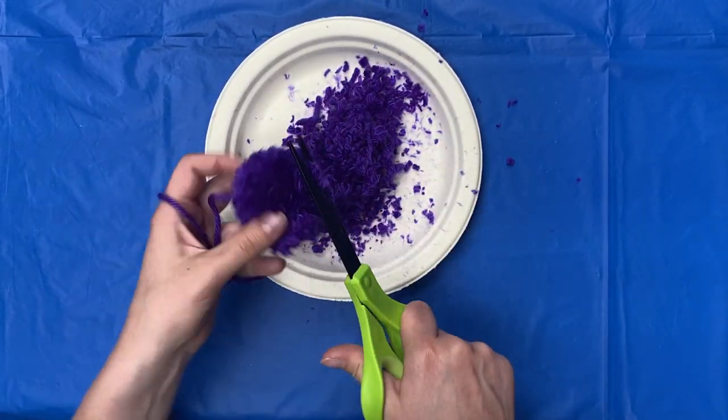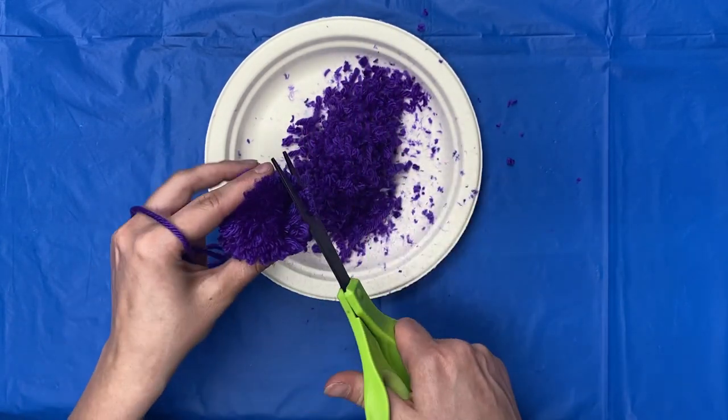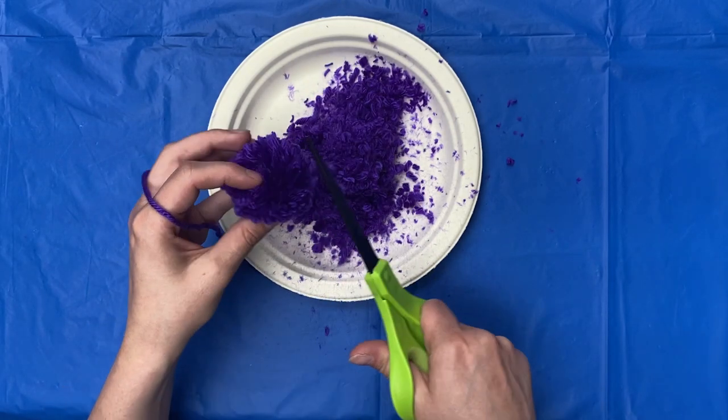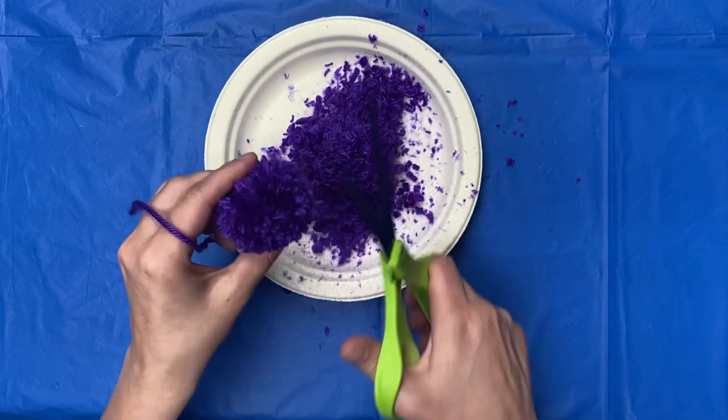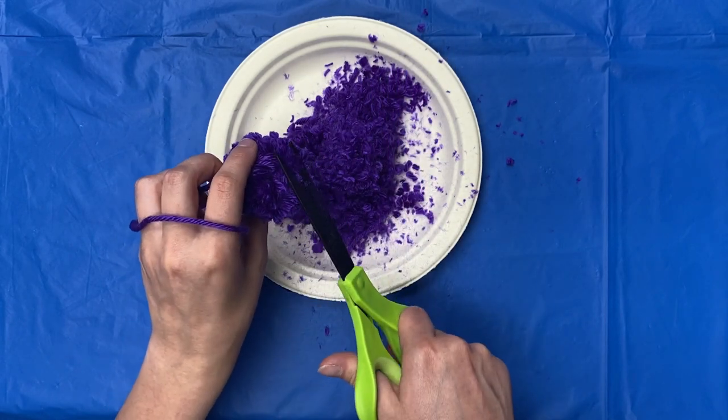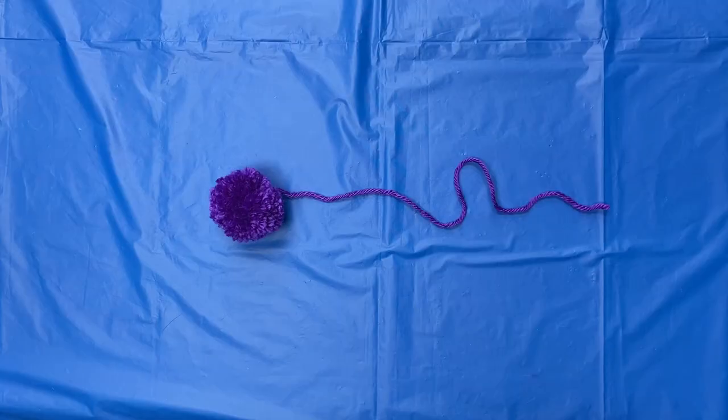I recommend holding onto your tail to make sure it doesn't get trimmed. Keep trimming until it's a nice round shape. It will take practice to get a nice perfect ball. Your bookmark is now ready.